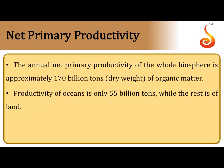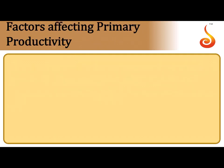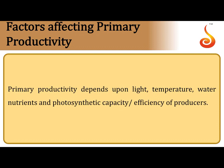The annual net primary productivity of the entire biosphere is approximately 170 billion tons of organic matter. Even though oceans cover much of the planet, they contribute only about 55 billion tons of annual net primary productivity compared to land. Factors affecting primary productivity include light, temperature, water, nutrients, and most importantly the photosynthetic efficiency of producers.